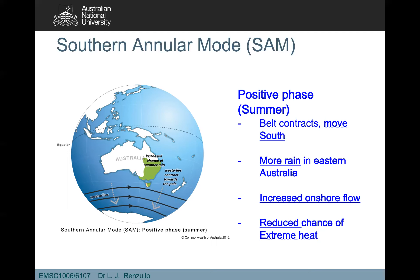In summertime, where the subtropical ridge is lower to the south of the Australian continent, a positive SAM phase means the belts move even further south than normal. This tends to give more rain to eastern Australia as the highs draw moisture from the Pacific Ocean and along the north Queensland coast, increasing onshore flow. This often gives you a reduced chance of heatwaves.